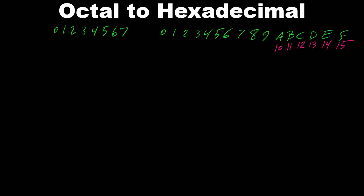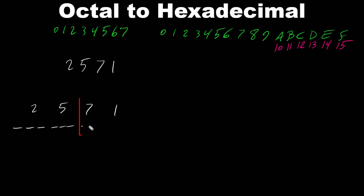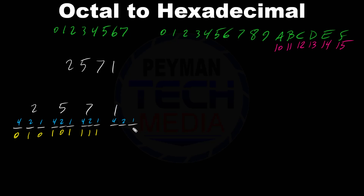Now let's convert octal number 2571 to hexadecimal. First, separate each octal digit: 2, 5, 7, and 1. For every octal digit we have 3 bits, with decimal values 1, 2, 4 for each group. For 2: only the 2-bit is on. For 5: 4 and 1 are on (4+1=5). For 7: all bits on. For 1: only 1 is on.